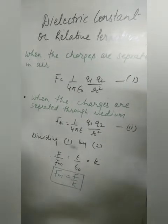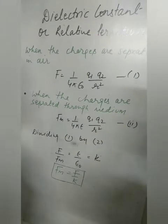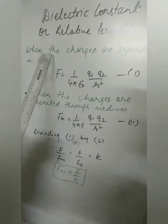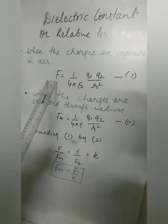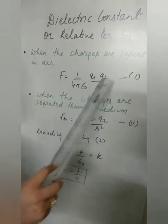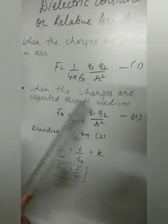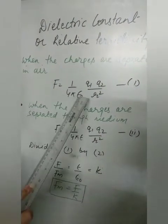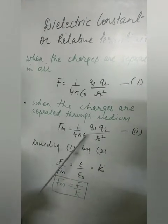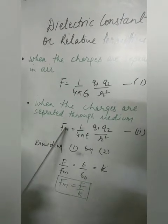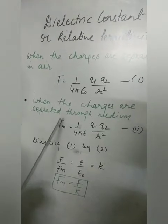Today we will be talking about dielectric constant, then we will move to the superposition principle and the types of charge distribution. When charges are separated by air or vacuum, we write the force as 1 upon 4πε₀ times q1q2 upon r². Here ε₀ is the permittivity of free space. Now when the same arrangement of charges is held at the same distance but placed in another medium, instead of ε₀ we write ε, that is the permittivity of that medium.